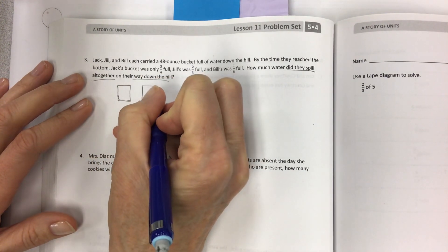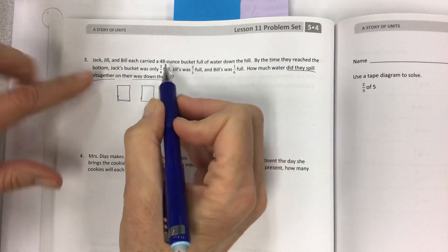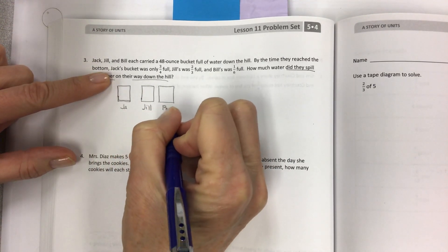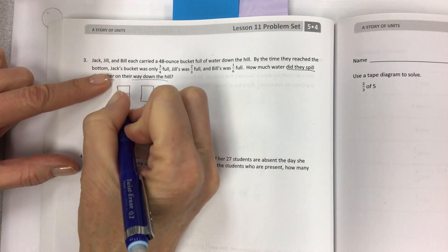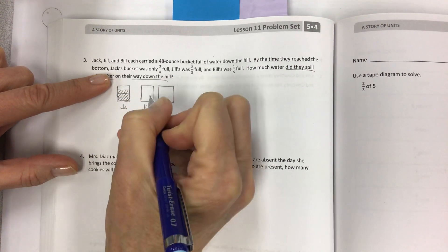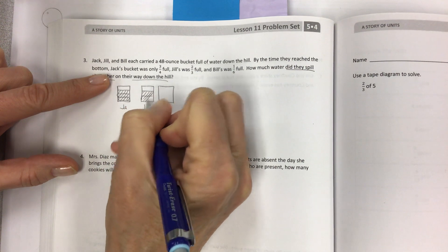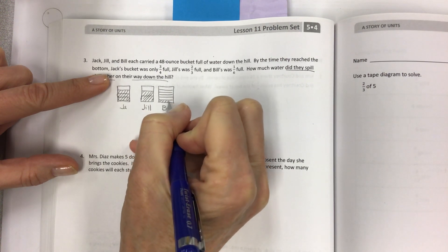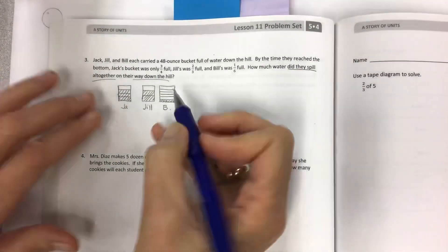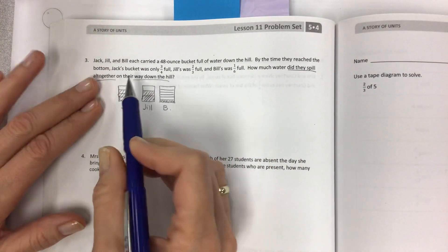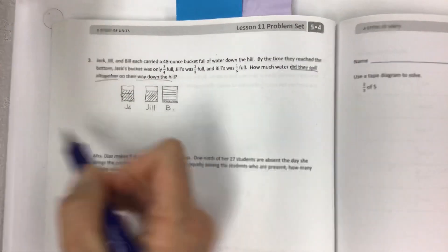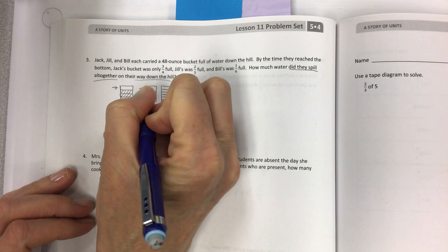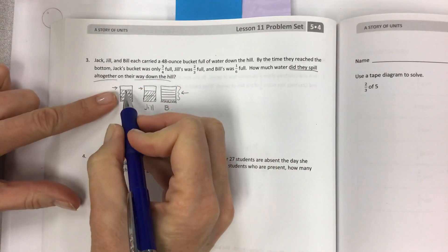So what I like to do on this one is make a bucket or a tape diagram that's more vertical. If I could make a straight one, it'd be even better. And then you can kind of see what the question is asking. So this is Jack, Jill, and then Bill. And so Jack's bucket was only three-fourths full. Jill's was two-thirds full. And poor Bill. One, two, three, four, five, six. Poor Bill. But the question is not about adding up these amounts. The question is about finding what fraction spilled out.